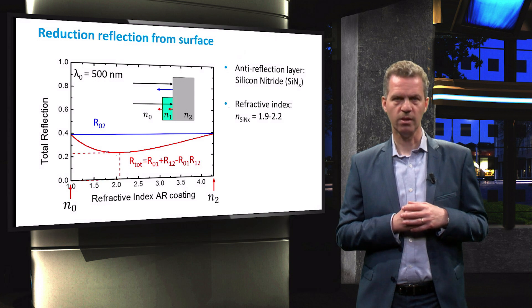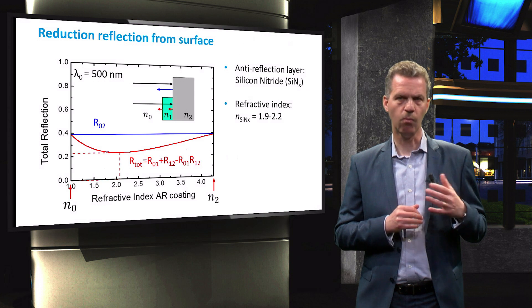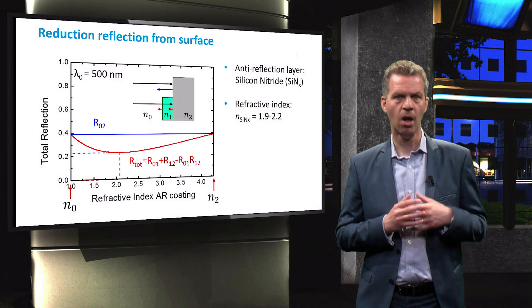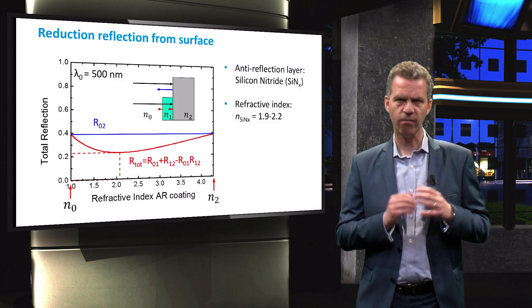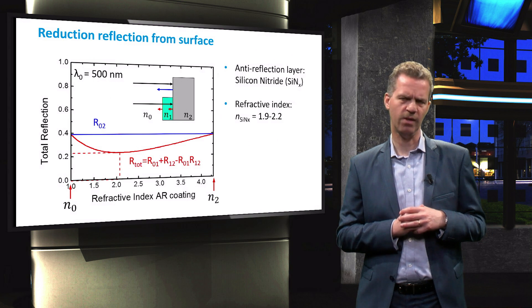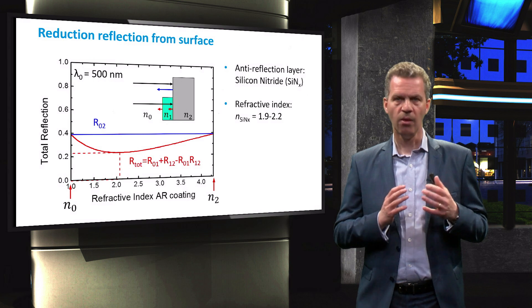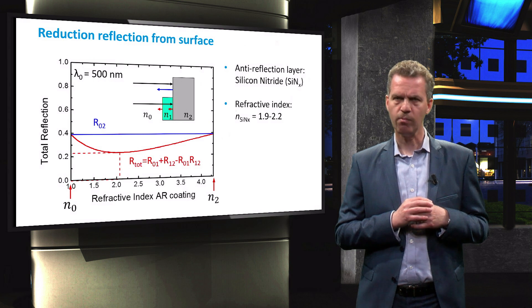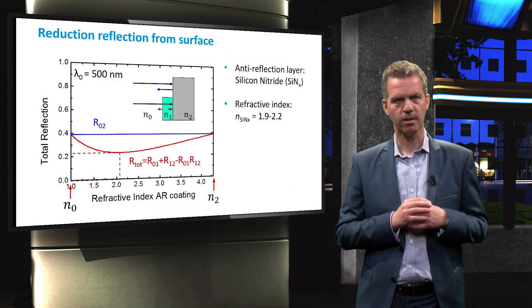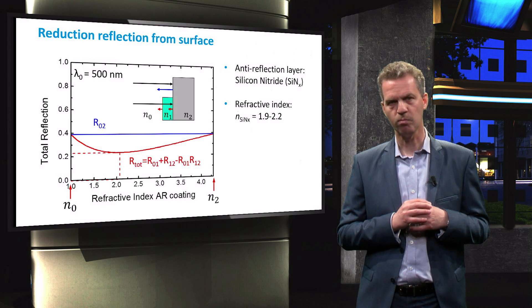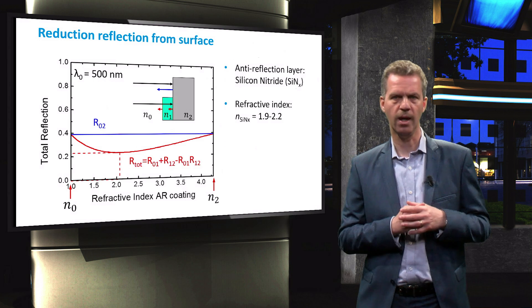The refractive index of silicon nitride is in between 1.9 and 2.2, which makes this material perfect as an anti-reflective coating. The layer will give the wafer a dark blue appearance, resulting from the fact that the reflection in the blue part of the spectrum is stronger than at other wavelengths.